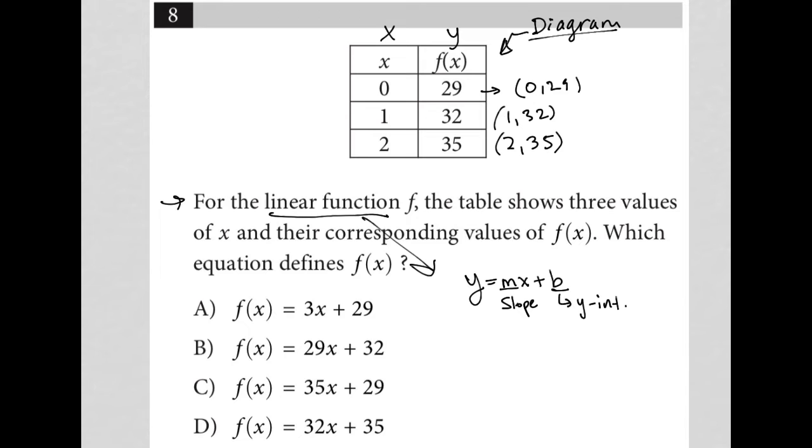The easiest thing to find first is the y-intercept. It's actually provided for us here. You find the y-intercept wherever your x value is equal to zero. So we know that b should be 29. So we know at least we have y equals mx plus 29.